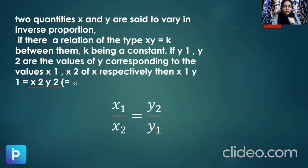And if I take it as the constant k, we'll be getting that x1 upon x2 will be equal to y2 upon y1. Right? Means inverse proportion is if one quantity is increased, the other decreases.